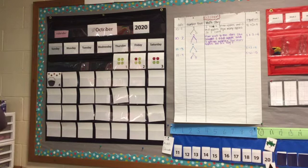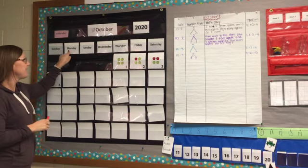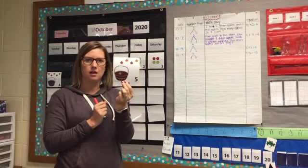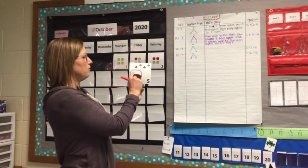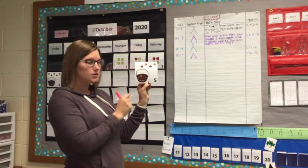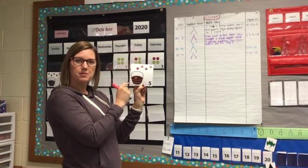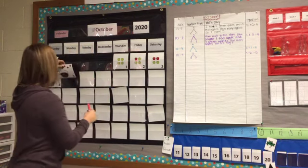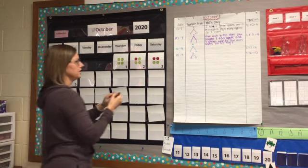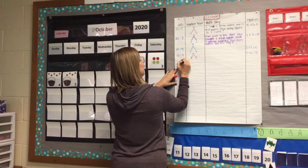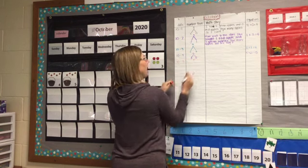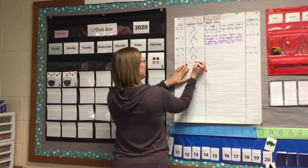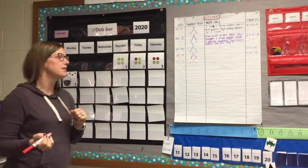Now we're back for today, Monday, October 5th, 2020. Let's take a look at today's card. Today's card shows one, two, three, four, five leaves — those same five leaves. One of them is in the basket; the other four are not. So for Monday, October 5th, 2020, we write 10-5. We still have five leaves, but this time we have four leaves not in the bucket and one leaf that is in the bucket.